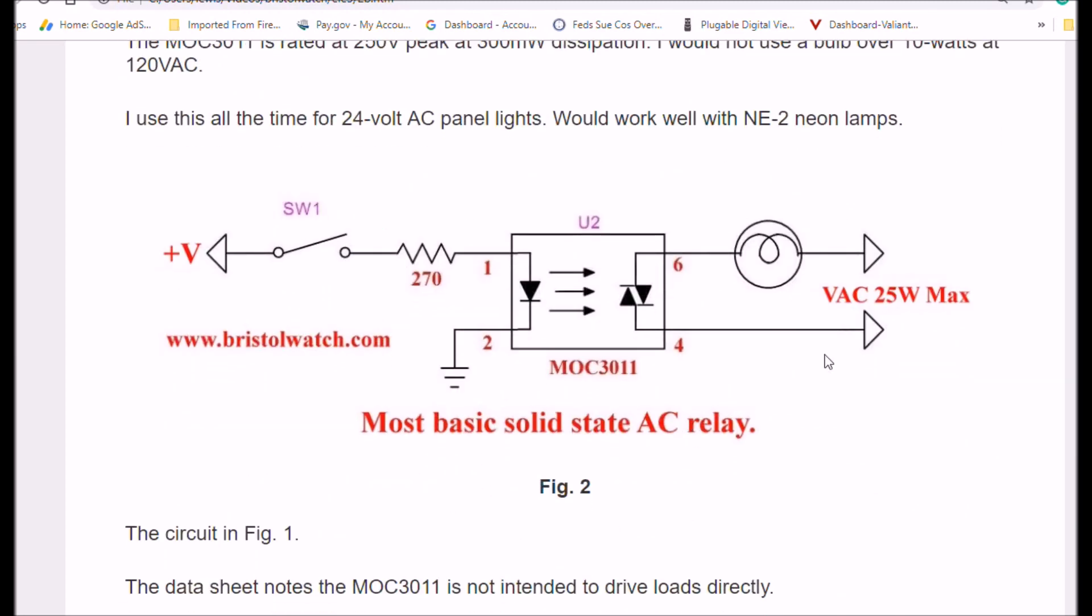Here's the schematic. It's fairly straightforward. While this says 25 watts max, I would not go that high. I would limit it to probably 15. This circuit is also good for 24 volt incandescent small light bulbs that are panel lamps.